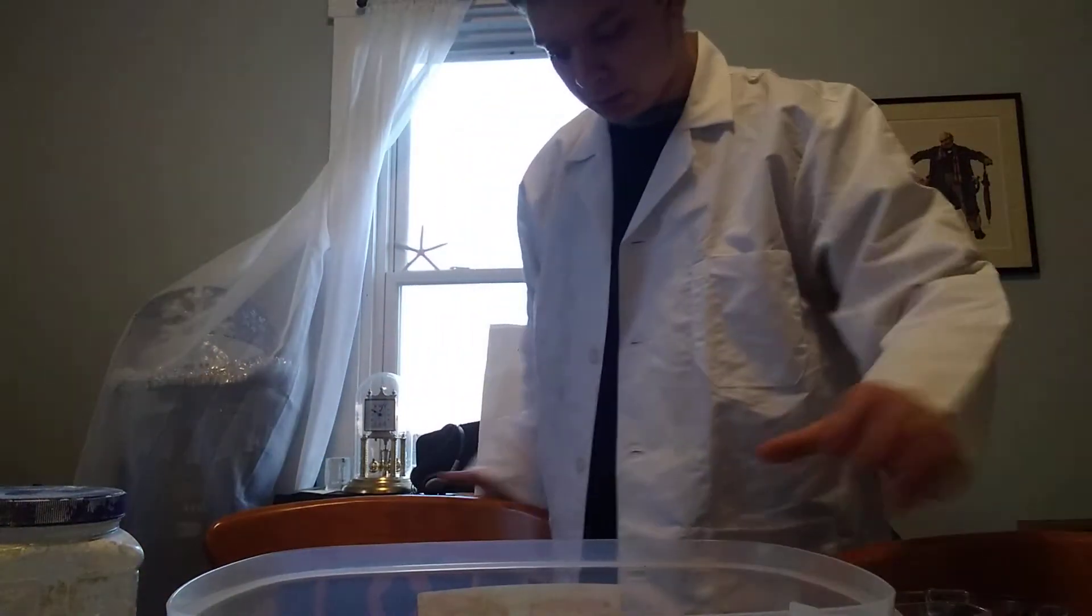Alright, I got the water. So before I do start, if you guys do not know how to make oobleck, like I said, it's just cornstarch and water. So we're going to pour some cornstarch in first. Pour it in.